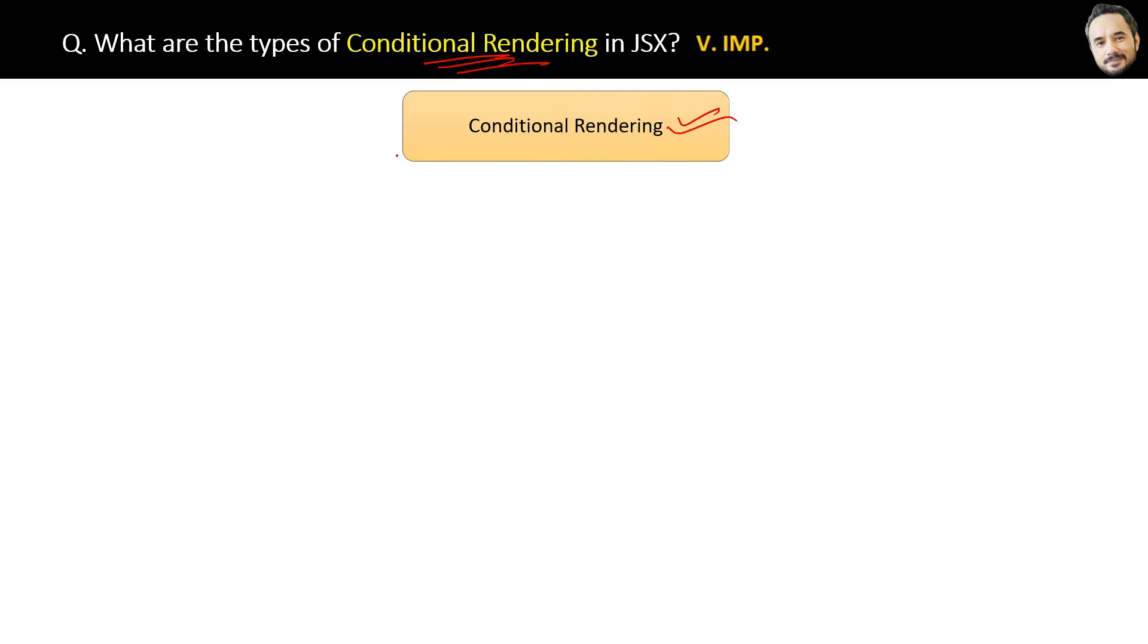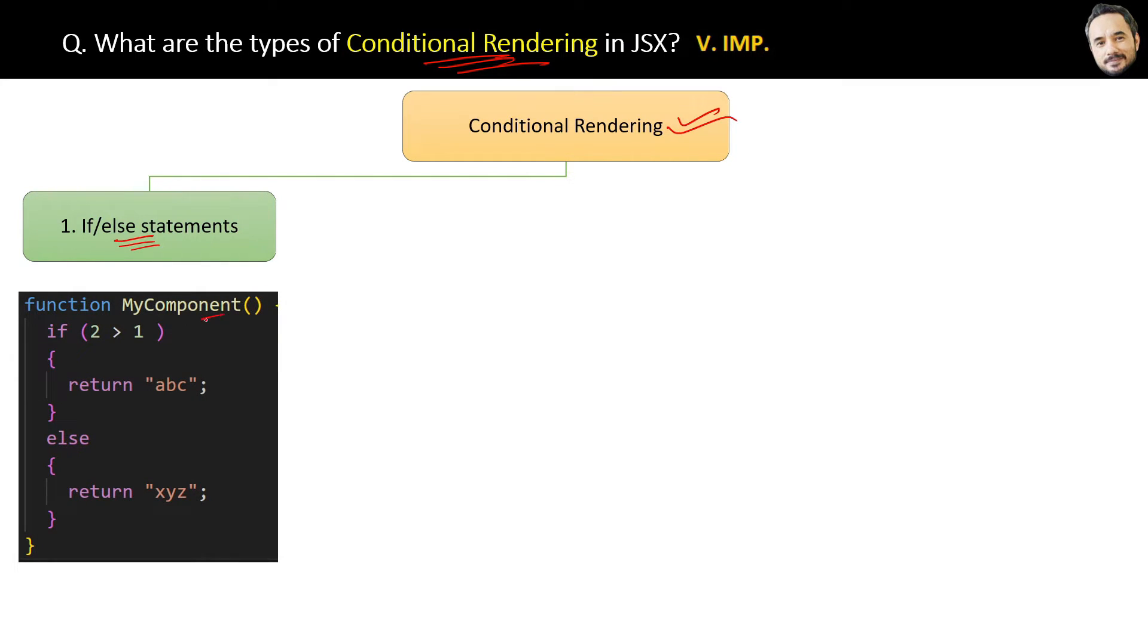The first one is the simplest one, and that is the if-else condition. Here is the code example. It says if 2 is greater than 1, which it is always, right, then return ABC, or else XYZ. The output, you know, ABC.